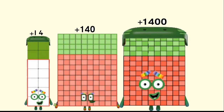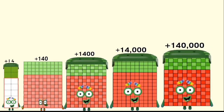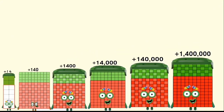Positive 1,400. Achoo. Positive 14,000. Achoo. Positive 140,000. Achoo. Positive 1,400,000.